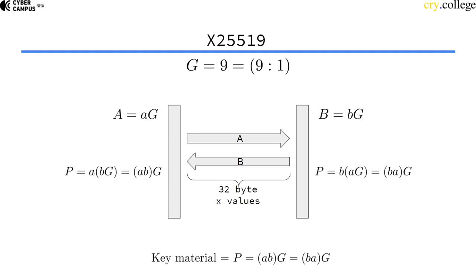The scalar multiplication works in projective space with X and Z coordinates. Otherwise it's exactly the same, it's just a normal elliptic curve Diffie-Hellman exchange. The computation is done on the Montgomery curve in projective space using only X and Z coordinates.